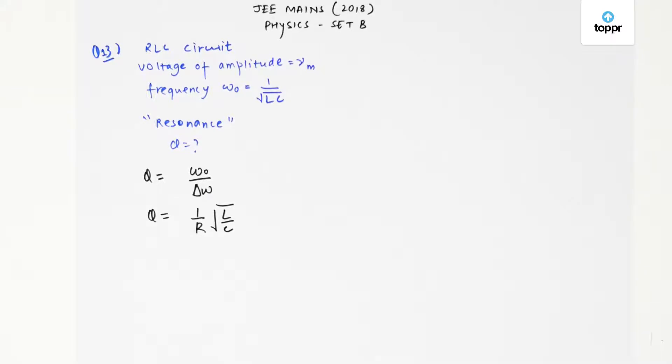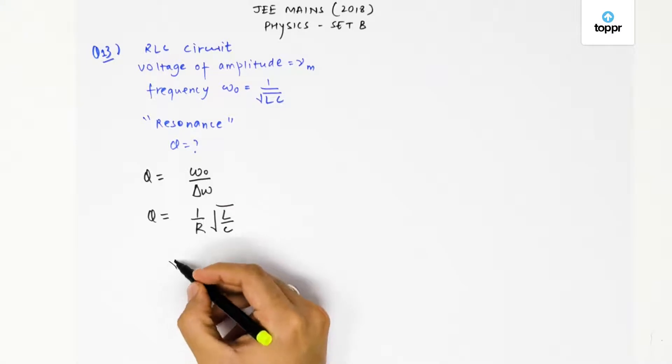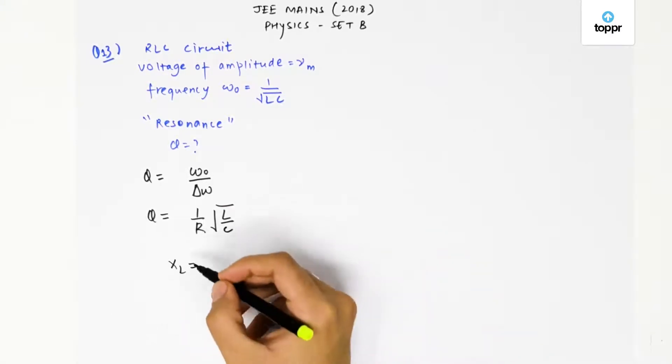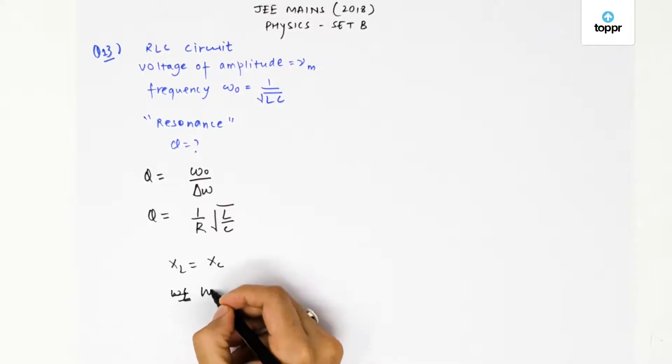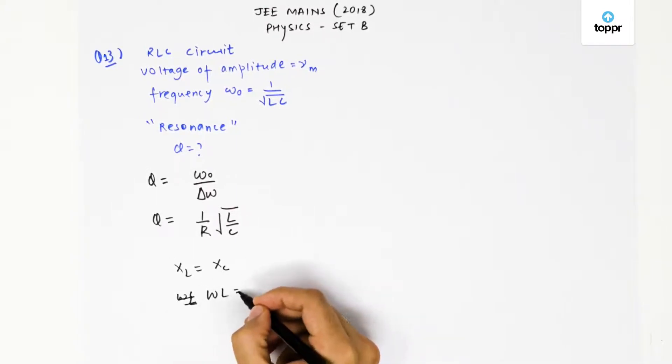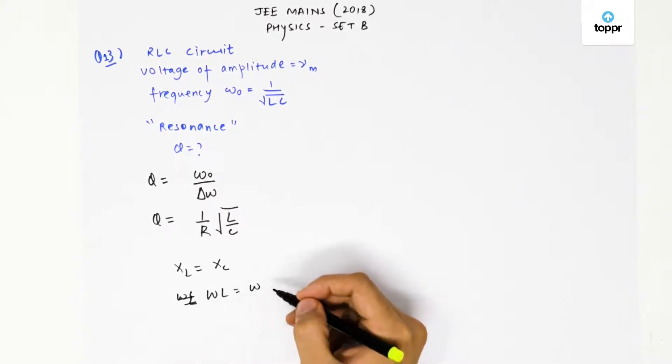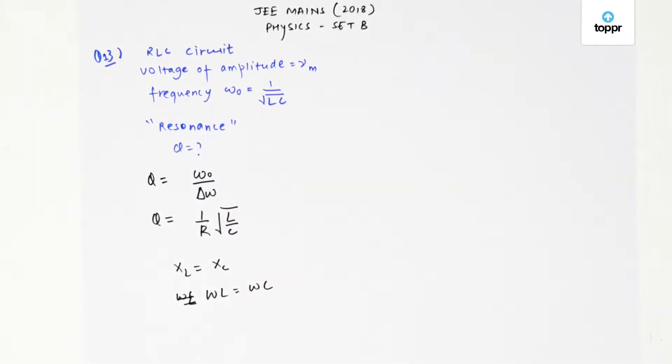Now, it is given that the circuit is in resonance. If the circuit is in resonance, this would hold true. In other words, ωL would be equal to 1/(ωC). Everywhere here it is ω₀ because that has been given to us.